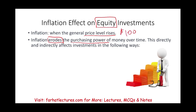Simply put, if you have a hundred dollars today, you might be able to buy 50 cups of coffee if a cup costs two dollars. However, if due to inflation the cup of coffee costs three dollars, then you cannot buy 50 cups — you can only buy approximately 33 cups. Your purchasing power has dropped; that $100 is buying you less.